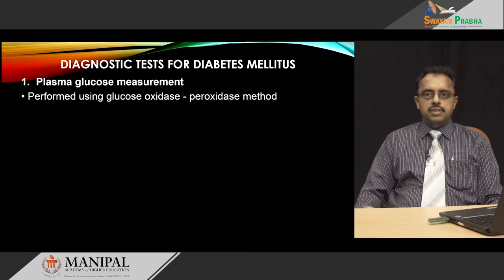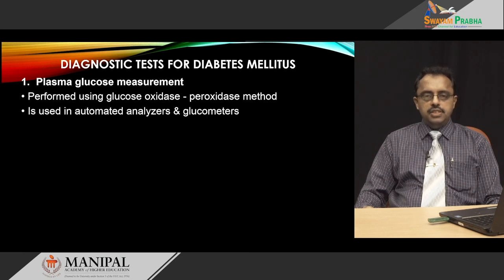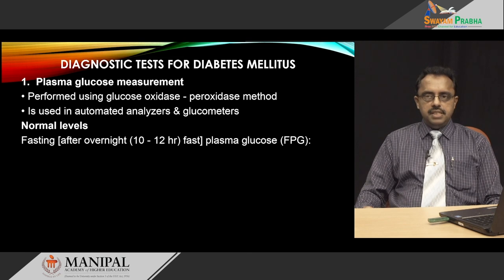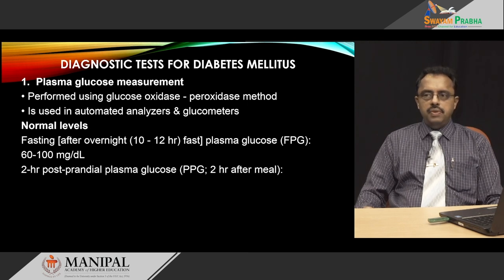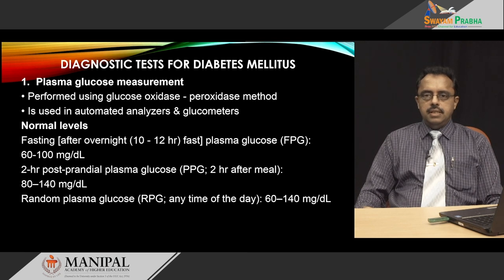Starting with plasma glucose measurement: it is performed using enzymes called glucose oxidase and peroxidase, employed in various automated analyzers and also in handheld glucometers used by patients at home or bedside. Normal fasting plasma glucose — where the patient fasts overnight for at least 10 hours — is 60 to 100 milligrams per deciliter. The 2-hour postprandial plasma glucose, tested 2 hours after a meal, has a normal range of 80 to 140 milligrams per deciliter. Random plasma glucose, done at any time of day regardless of fasting, has a range of 60 to 140 milligrams per deciliter.